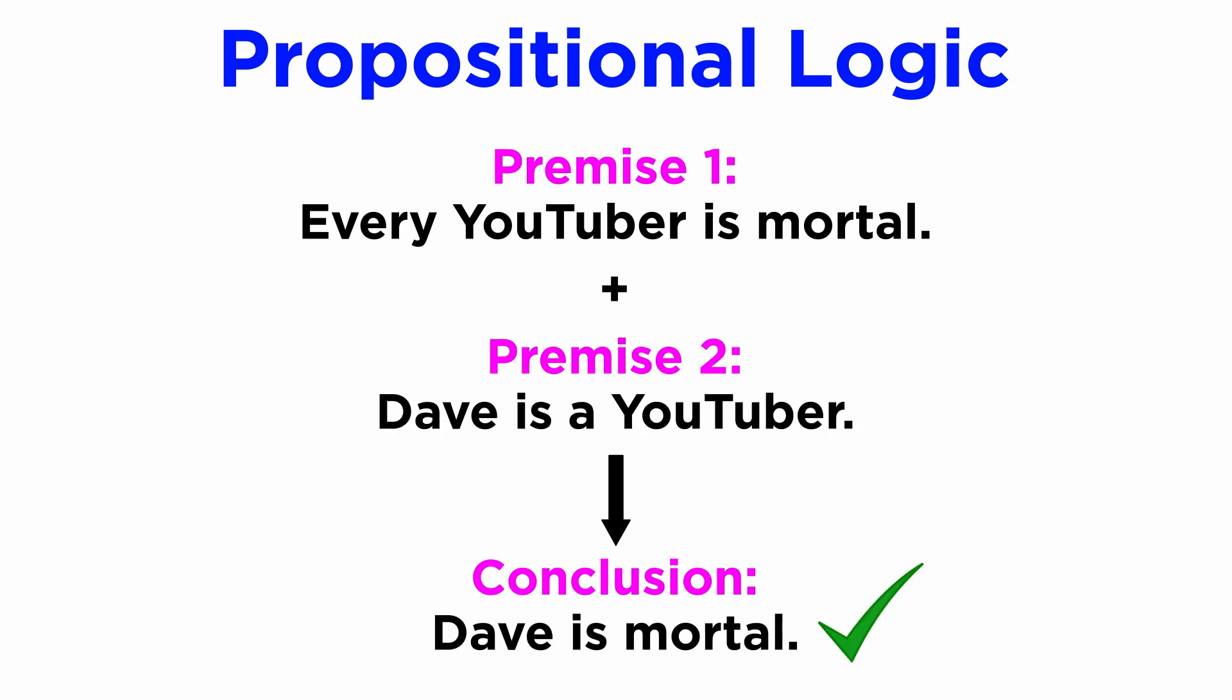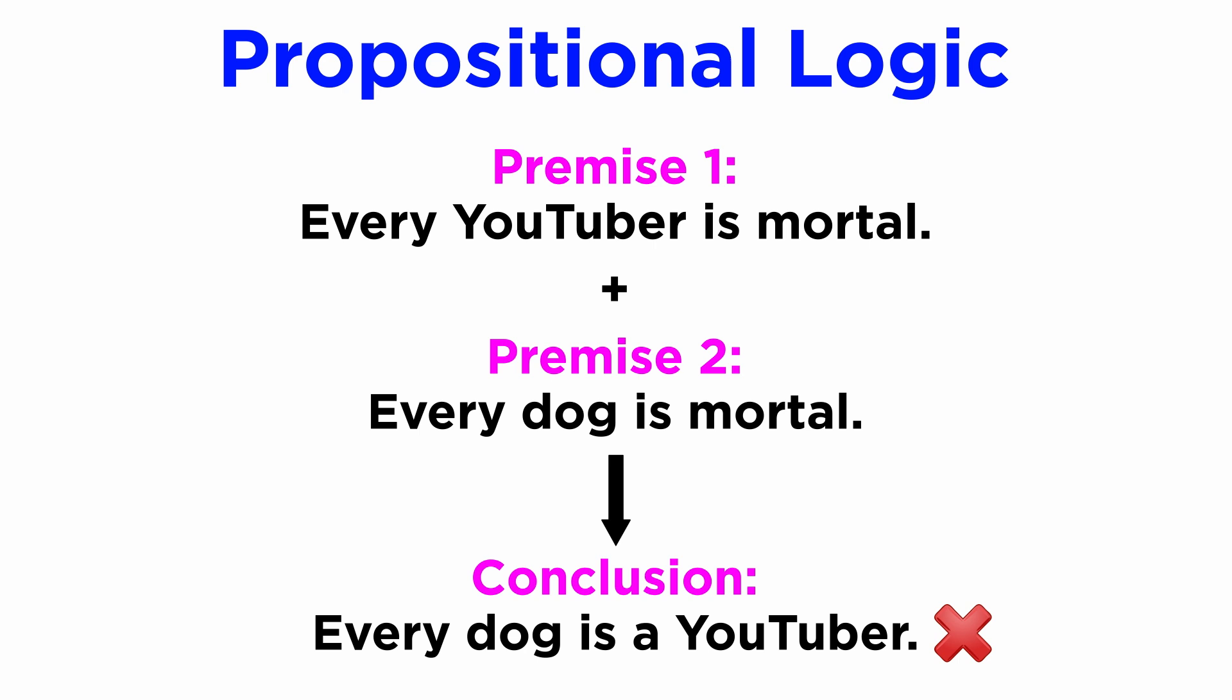Though the first inference is true, and the second obviously false, and we can demonstrate this using set theory, propositional logic reaches a standstill, representing both sentences. We arrive at P, Q, thus R, which means both are equally false, as R is not present in any of the propositions before the conclusion.